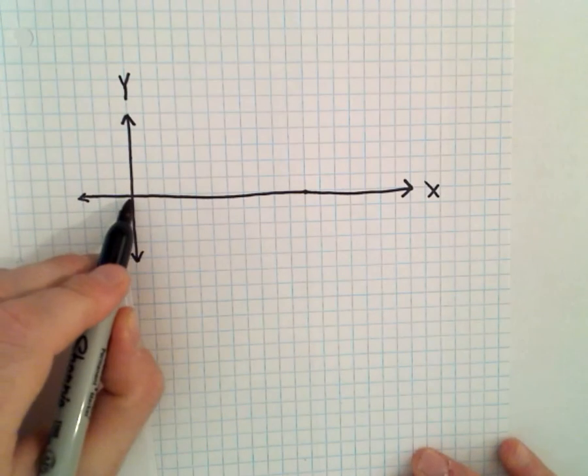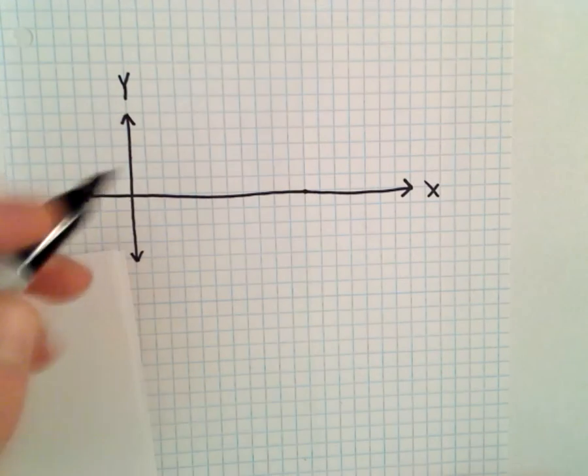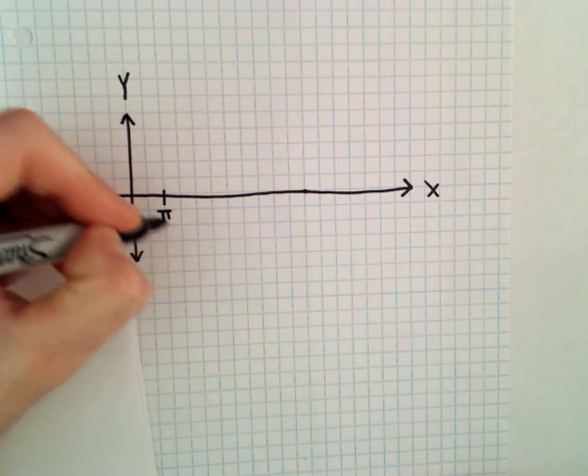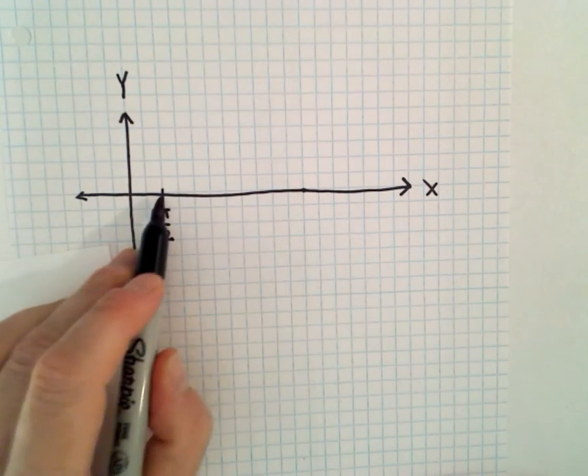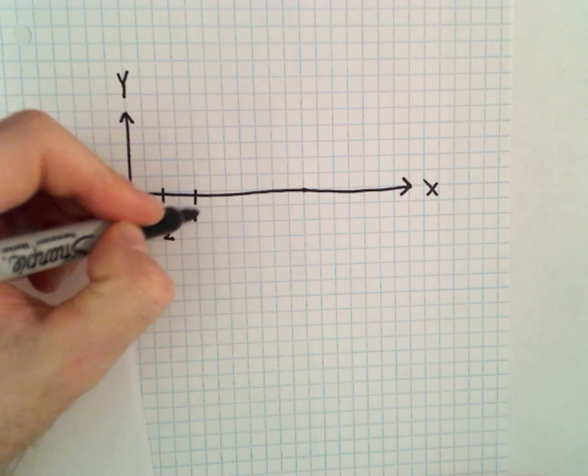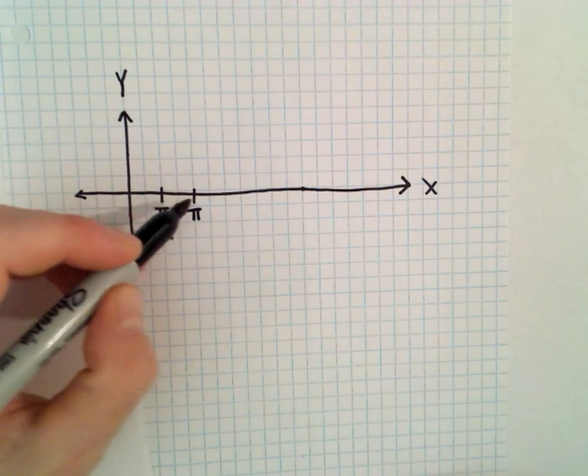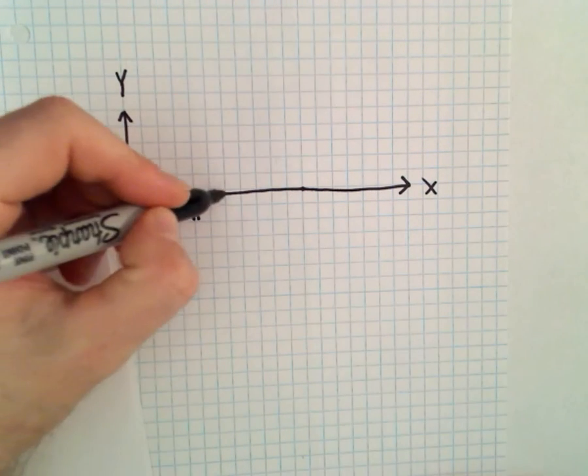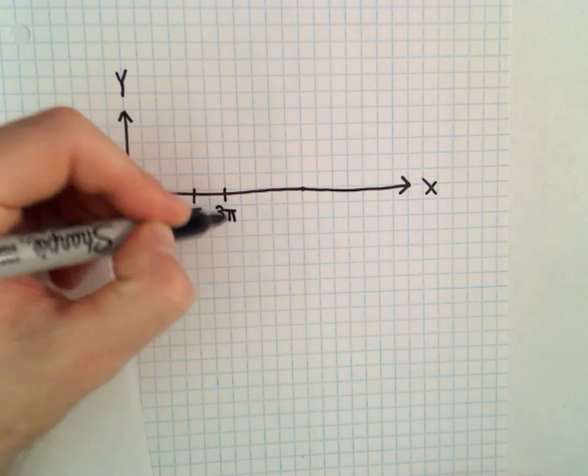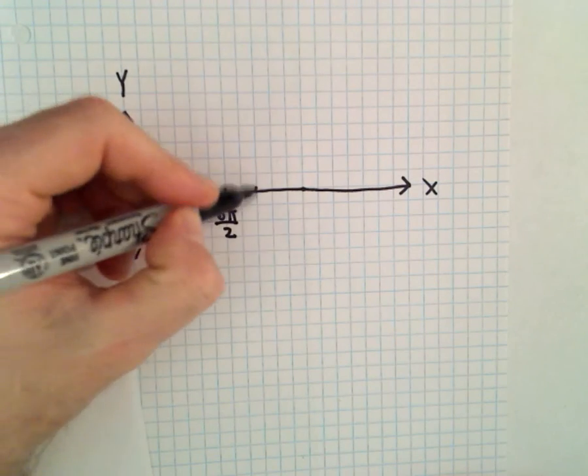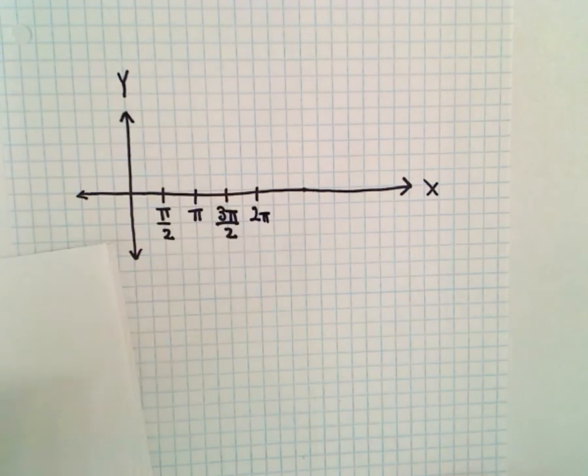Here's x equals zero. I'll move over, there's pi over two. I'll move over another pi over two, which would put me at pi. If I go over another, I'll have three pi over two, and then I'll have four pi over two, or two pi.